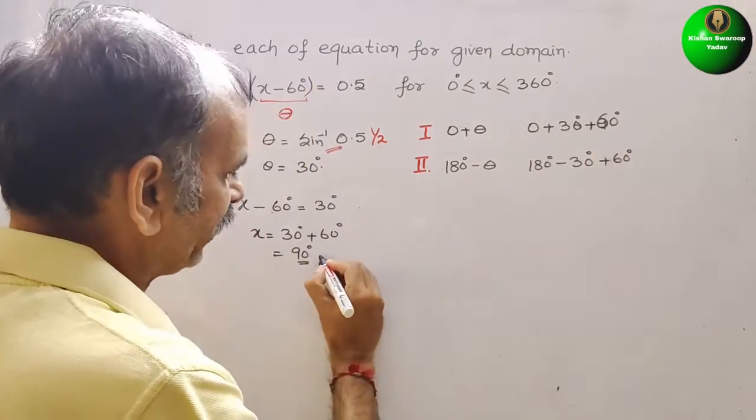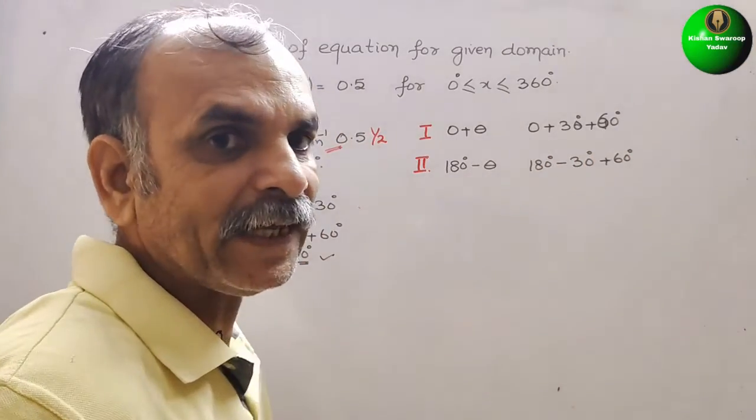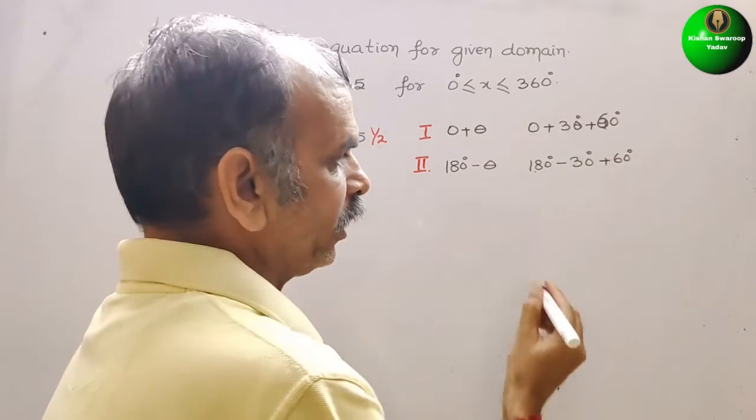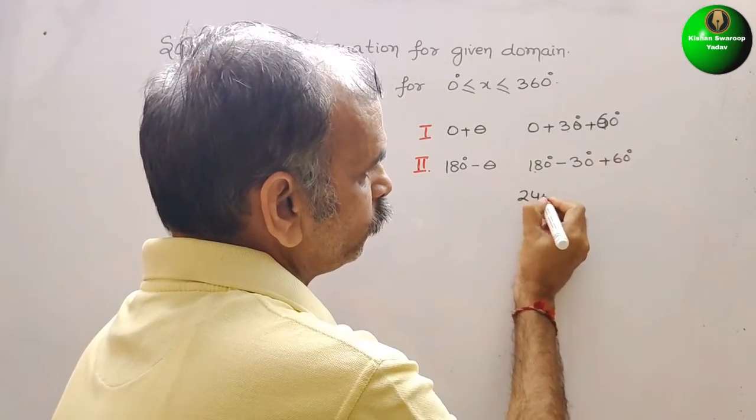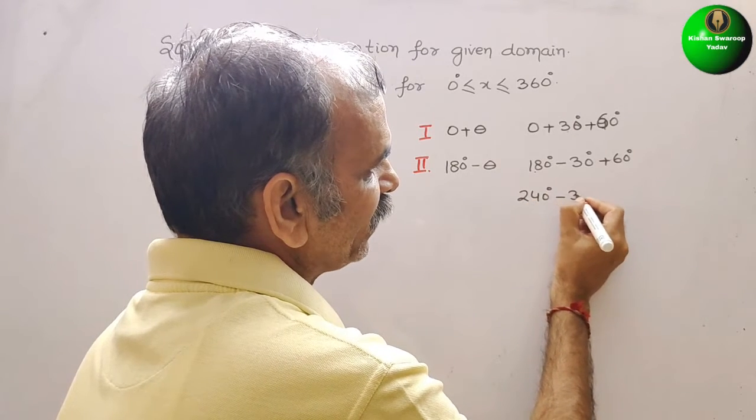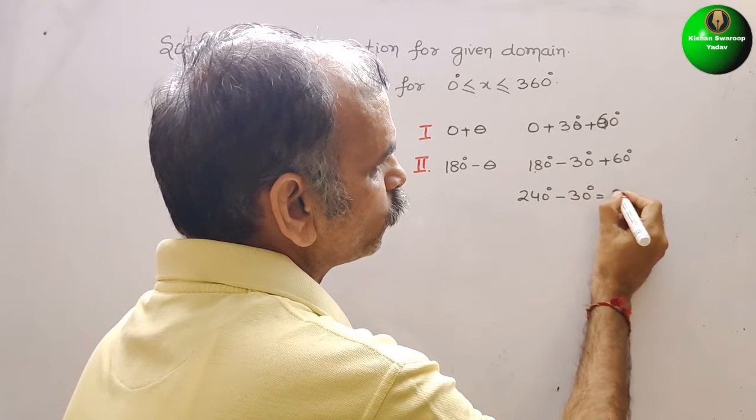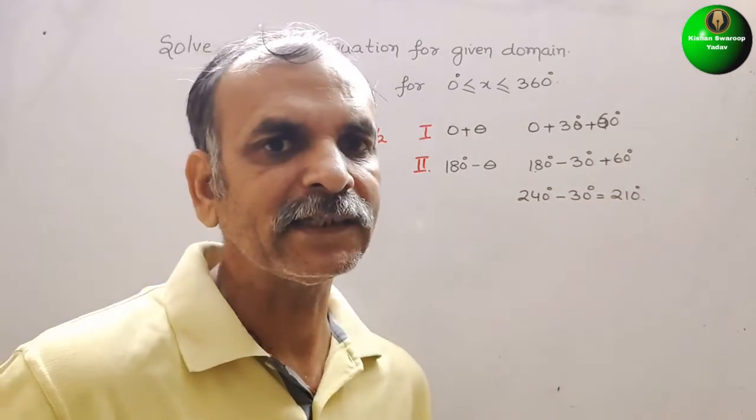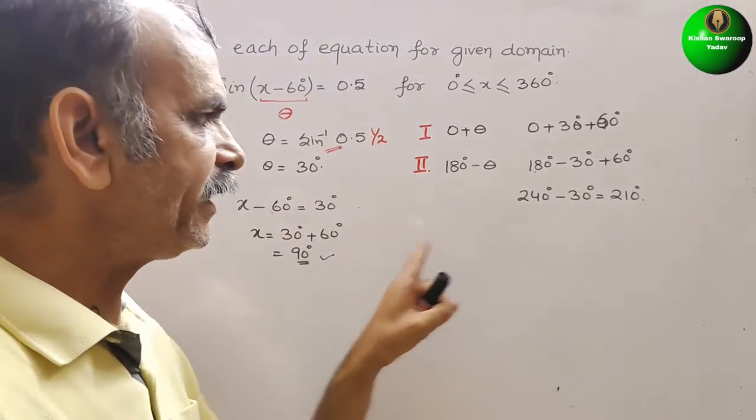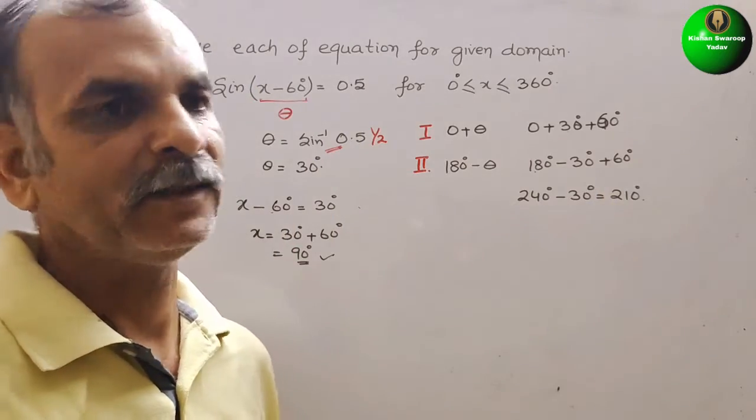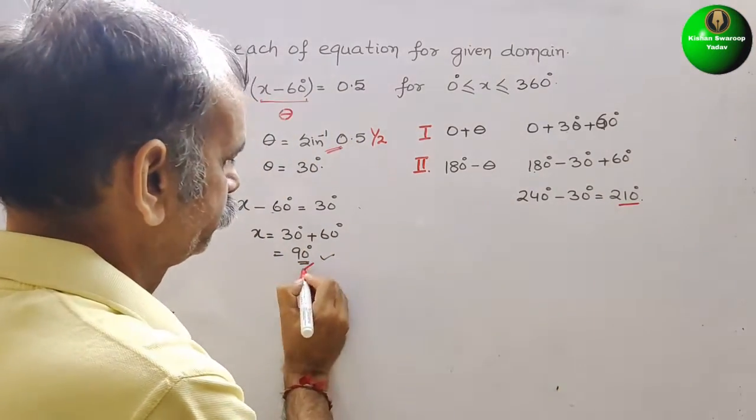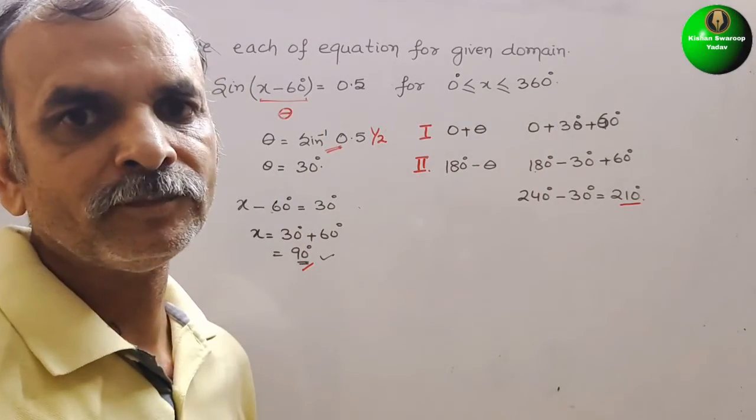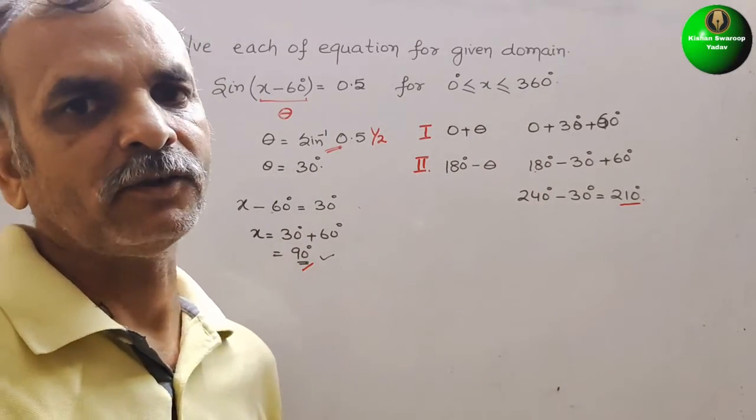So now see this, first one is your 90 degrees, 30 plus 60 is 90 what we get here. Second angle is what? 180 plus 60 is 240, 240 degrees minus 30 degrees, that is equal to 210 degrees. Therefore your two angles are 90 degrees and 210 degrees, and it lies between this only. So like this we have to find it out.